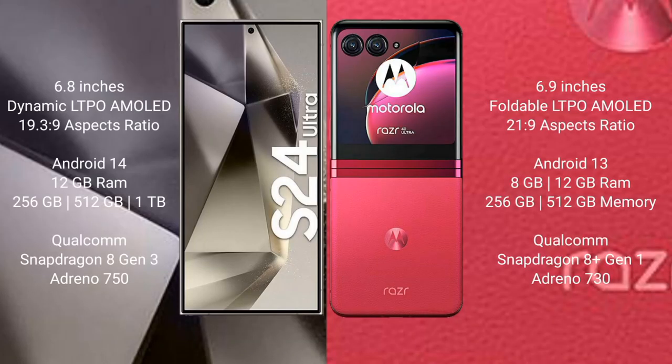Samsung Galaxy S24 Ultra comes with a 6.8-inch Dynamic LTPO AMOLED display and aspect ratio 19.3:9. Motorola Razr 40 Ultra comes with a 6.9-inch foldable LTPO AMOLED display and aspect ratio 21:9.